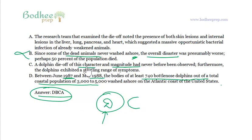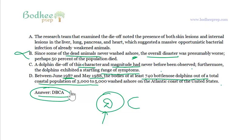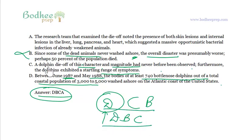A dolphin die-off of this character and magnitude — 'character' is given here and 'magnitude' is given here — had never before been observed. Furthermore, the dolphins exhibited a startling range of symptoms. So you might say the order is DC. But the big challenge is: would you place B here, making it DBC? Since some of the dead animals never washed ashore, the overall disaster was presumably worse — perhaps 50% of the population died.